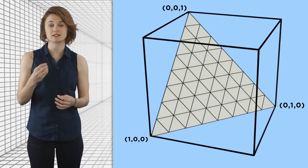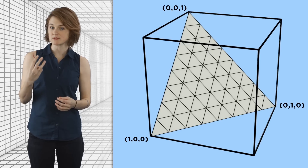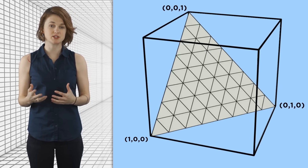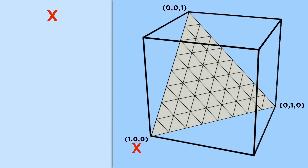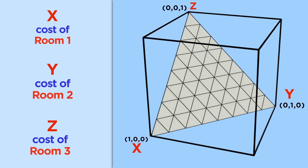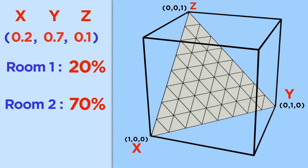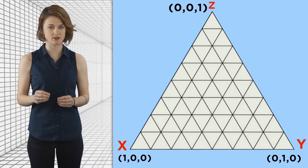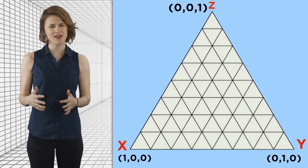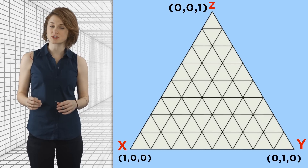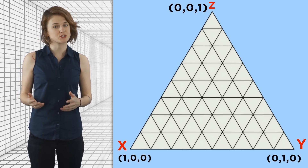Each point in the triangle is labeled by three coordinates because it's in three dimensions, and those correspond to a distribution of the rent. The x-coordinate is the cost of room 1, the y-coordinate is the cost of room 2, and the z-coordinate is the cost of room 3. So the point (0.2, 0.7, 0.1) means bedroom 1 costs 20% of the total rent, bedroom 2 is 70%, and bedroom 3 is 10%. At each of the three corners of the big triangle, one room costs 100% of the rent and the other two are free. Along the sides of the triangle, one room is free while the other two split the rent.